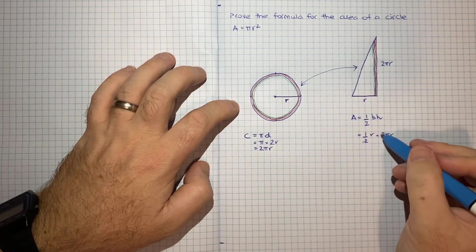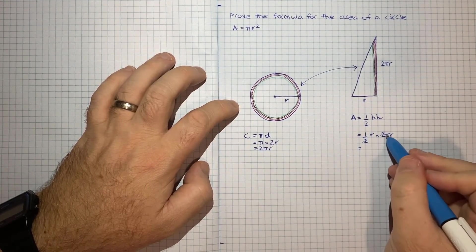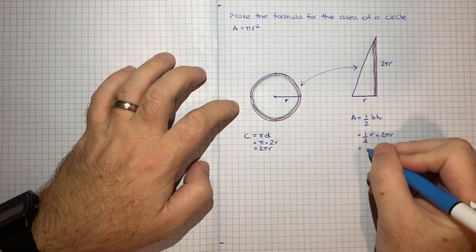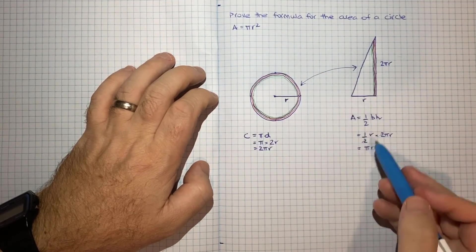And what happens is these two's cancel, so we end up with pi and then r times r, so pi r squared. And there you have it, there's the formula.